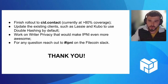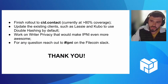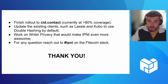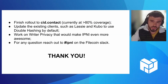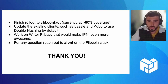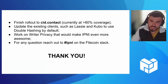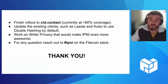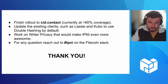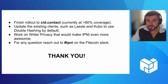The next steps for us are to finish the rollout on cid.contact. Currently we cover about 80 percent of lookup requests, and this number is growing. We also need to update the existing clients — IPNI is used by projects such as Lassie, the Filecoin retrieval client; Kubo, the most popular IPFS implementation; and Saturn, a decentralized CDN — so that they use double hashing by default and no longer send regular lookups.